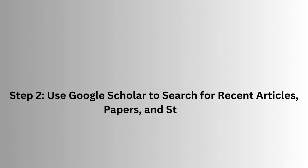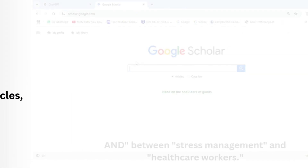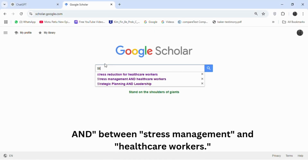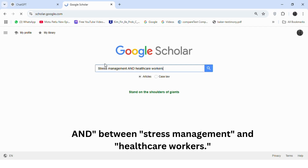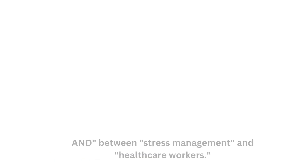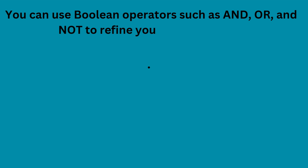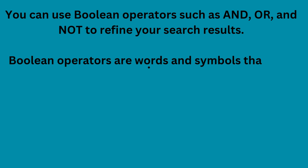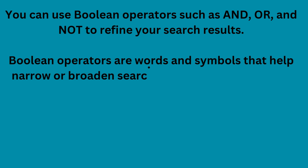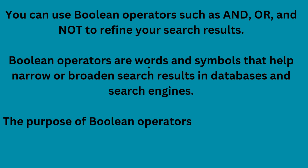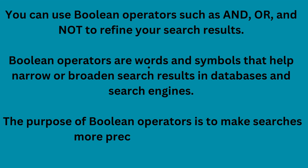Step 2: Use Google Scholar to search for recent articles, papers, and studies. Now let's go to Google Scholar. I will use 'AND' between 'stress management' and 'healthcare workers.' You can use Boolean operators such as AND, OR, and NOT to refine your search results. Boolean operators are words and symbols that help narrow or broaden search results in databases and search engines. Their purpose is to make searches more precise and save time.